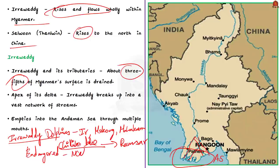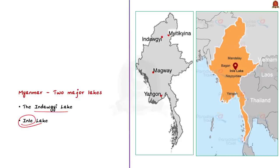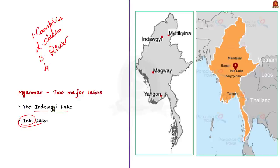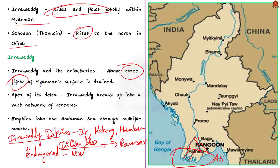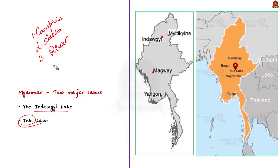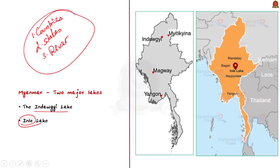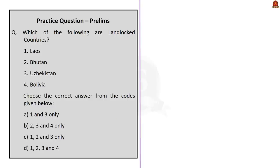Myanmar has two major lakes: Indawgyi and Inle Lake. Regarding Myanmar, you need to remember the bordering countries, the Indian states that border Myanmar, and most importantly the river Irrawaddy. Also remember that the Mekong River forms a brief border between Myanmar and Laos — it is one of the longest rivers in Southeast Asia. Myanmar is a friendly country and close neighbor of India's, and a map-based question from Myanmar is a potential preliminary exam area. With that, let's move on to the next segment.